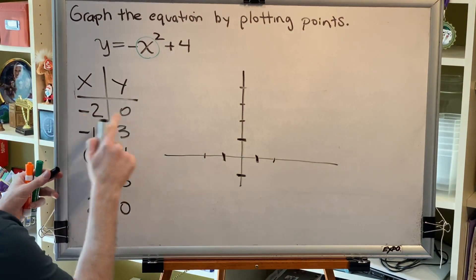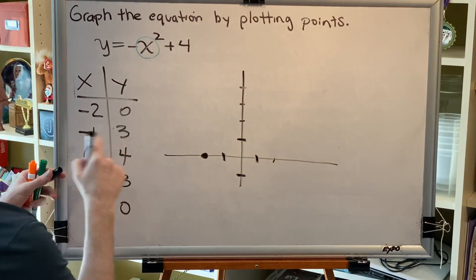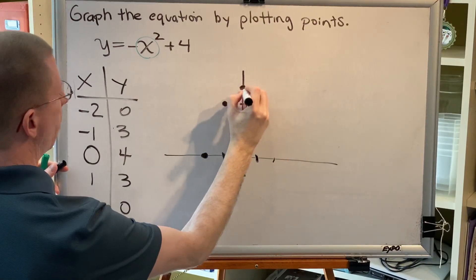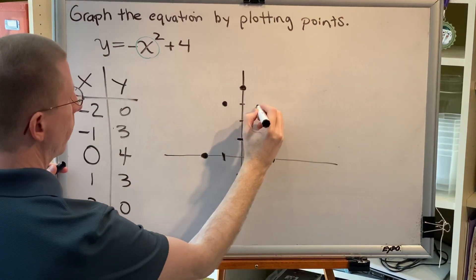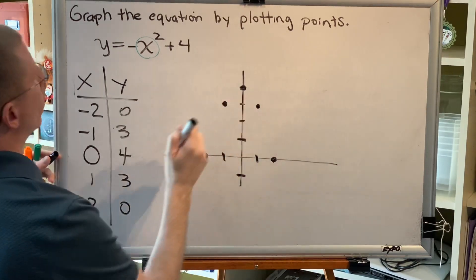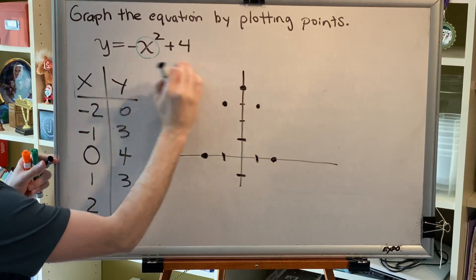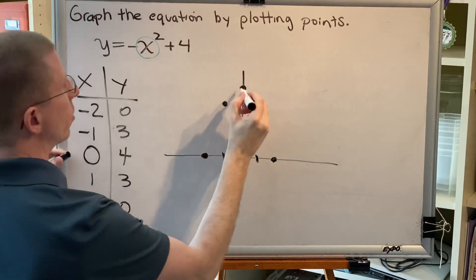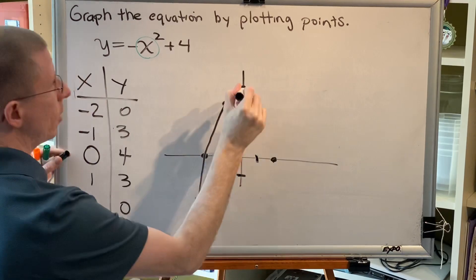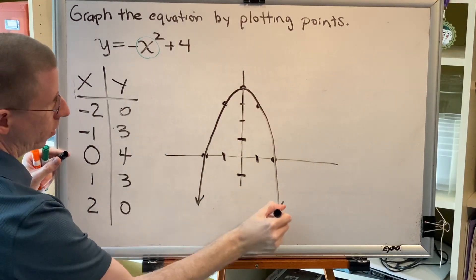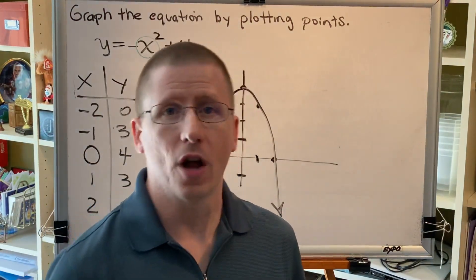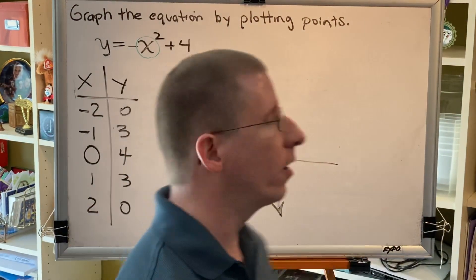Let's plot our points: negative 2, 0; negative 1, 3; 0, 4; 1, 3; 2, 0. I was expecting something parabolic, because this is a quadratic equation, and indeed my points do seem to form a parabola — that is a U-shaped graph that opens up or down. Some parabolas open left or right, but those are not functions, and so we don't study them here in college algebra.